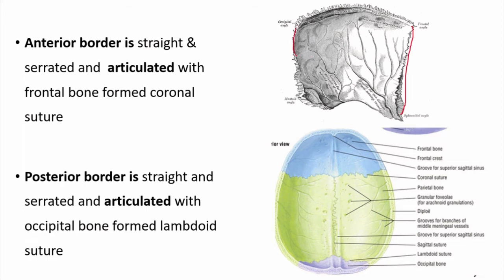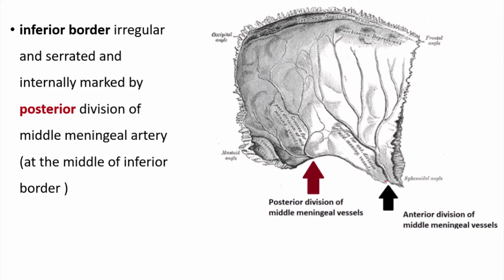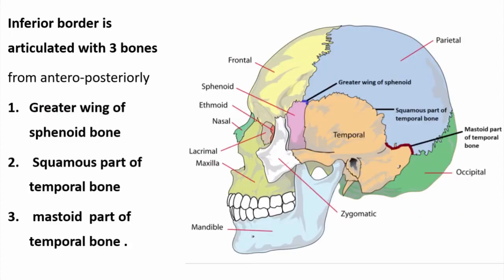The anterior and posterior borders are relatively straight. The anterior border articulates with the frontal bone to form the coronal suture. The posterior border articulates with the occipital bone to form the lambdoid suture. The inferior border is irregular, and the middle of the inferior border is internally marked by a groove for the posterior division of the middle meningeal vessels. The inferior border articulates with three bones from before backwards: a smaller part with the greater wing of the sphenoid, most of the part with the squamous part of the temporal bone, and lastly the mastoid part of the temporal bone.